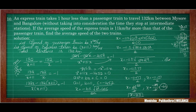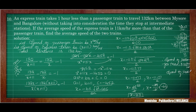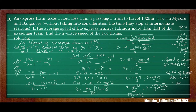Therefore speed of passenger train is x equals 33 km per hour. Speed of express train is 11 km per hour more than that of the passenger train, so 33 plus 11 equals 44 km per hour.